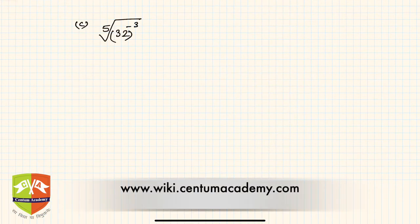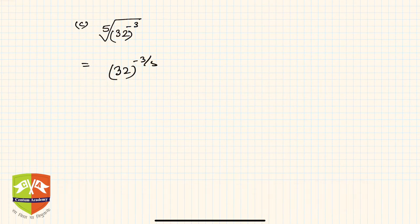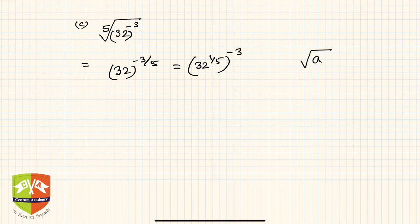The third question is the fifth root of 32 to the power minus 3. I write this as 32 to the power minus 3 upon 5, which equals 32 to the power 1 by 5, whole to the power minus 3. This is because the nth root of a is a to the power 1 by n — here it is the fifth root, so I write 1 by 5.